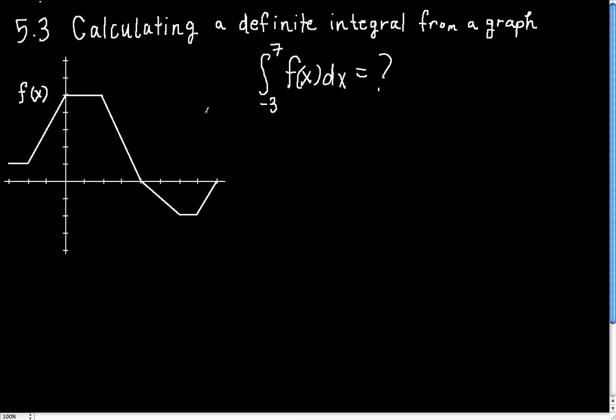So, first of all, let's realize that we're starting at negative 3. So, we start right here, and I'll put a little dotted line there. So, that's where we're going to start, and where are we going to end? We're going to end at 7. So, 1, 2, 3, 4, 5, 6, 7. And we're going to end right here.